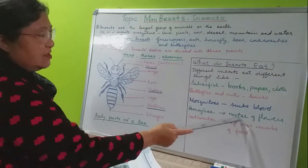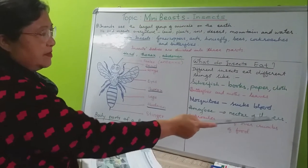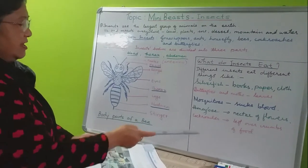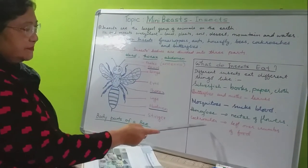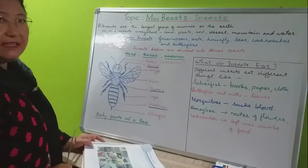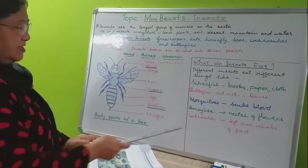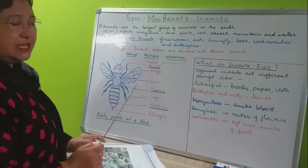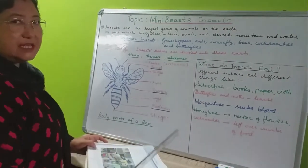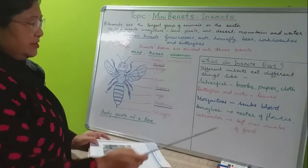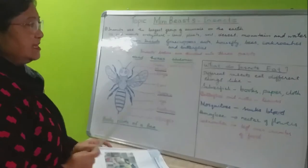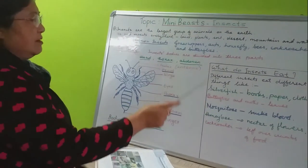Next is the honeybee. Honeybees love to eat nectar from flowers — they suck the nectar from flowers and make honey. Next are cockroaches — you find them especially in the kitchen at night. If the lights are off, you'll find so many cockroaches roaming around. They love to eat leftover crumbs of food.